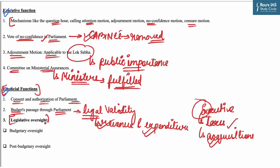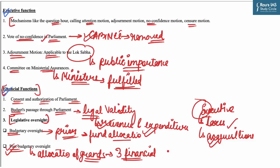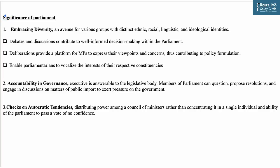Legislative oversight can be studied under budgetary oversight and post-budgetary oversight. Under budgetary oversight, supervision is done prior to fund allocation, while post-budgetary oversight involves regulation subsequent to the allocation of grants by three financial committees: the Committee on Public Undertakings, the Estimates Committee, and the Public Accounts Committee. With these legislative and executive functions, the significance of Parliament can be understood.